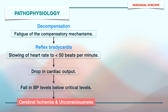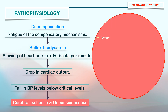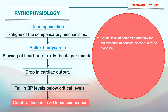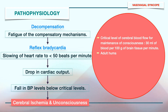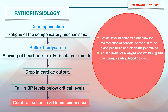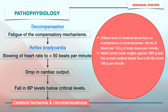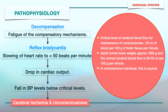It is important to note that the critical level of cerebral blood flow for maintenance of consciousness is about 30 ml of blood per 100 g of brain tissue per minute. The adult human brain weighs approximately 1360 grams and the normal cerebral blood flow is 50 to 55 ml per 100 g per minute. Hence, in a normotensive individual, this is equivalent to a systolic blood pressure of 70 mmHg.